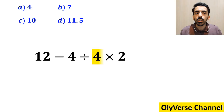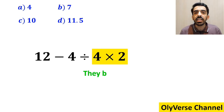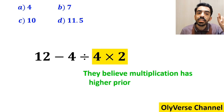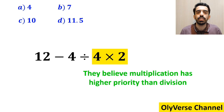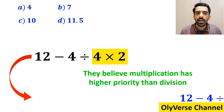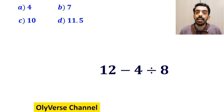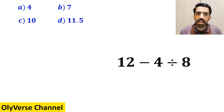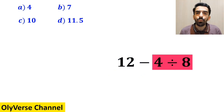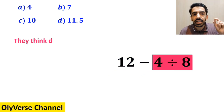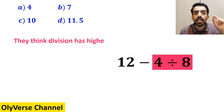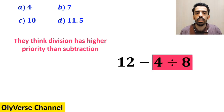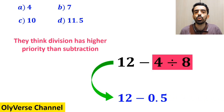Then they perform the multiplication between 4 and 2, because they believe multiplication has higher priority than division. So they write this expression as 12 minus 4 divided by 8. In the final step, they focus on the division between 4 and 8, because they think division has higher priority than subtraction, and replace this expression with 12 minus 0.5.